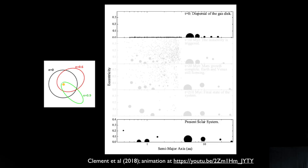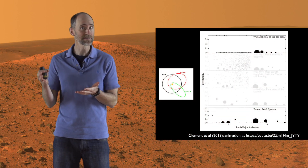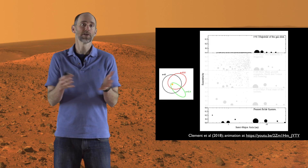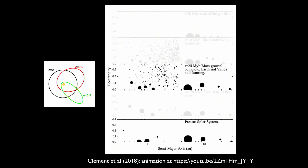Let me show you snapshots from a simulation of the early instability model. The vertical axis is orbital eccentricity and the horizontal axis is orbital distance. The starting conditions include building blocks of planets in the inner solar system and five giant planets: Jupiter, Saturn, Uranus, Neptune, and an extra ice giant that gets ejected during the instability. Starting from when the gas disk dissipated, about 10 million years later the instability was triggered among the giant planets. That really excited the asteroid belt — a lot of material was cleared out — and even the Mars region was affected. Within 20 million years, Mars' growth was completely stopped.